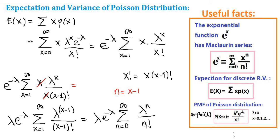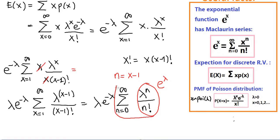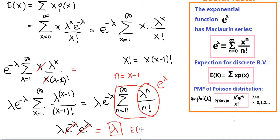The sum of lambda to the n over n factorial from 0 to infinity looks exactly like the Maclaurin series for e to the x, but with lambda as the variable. So this whole summation equals e to the lambda. Now we have lambda times e to the negative lambda times e to the lambda. The e to the negative lambda and e to the lambda cancel, giving e to the 0 which is 1, so the expectation of the Poisson distribution is lambda.